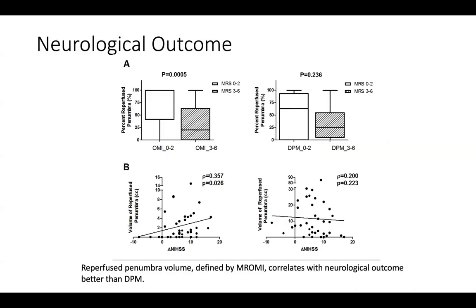Looking at neurological outcomes using the modified Rankin Scale (0-1 is better, 3-6 is worse), there is a significantly higher reperfused penumbra volume associated with better outcomes using the OMI approach, while no significant difference is seen with the DPM-based approach. There is also a linear association between OMI-identified reperfused penumbra and delta NIHSS, but no association for the DPM-identified reperfused penumbra.